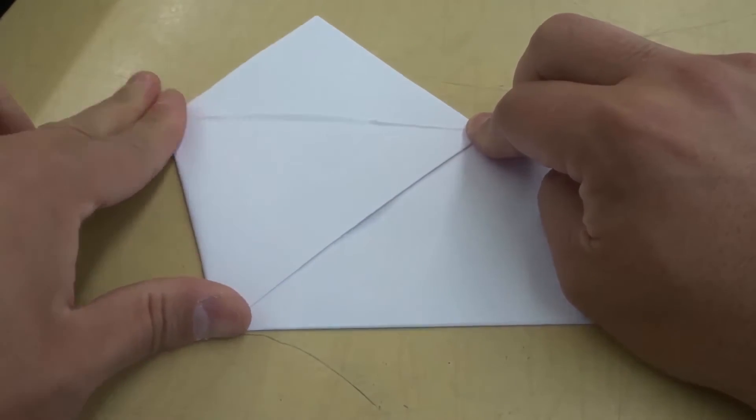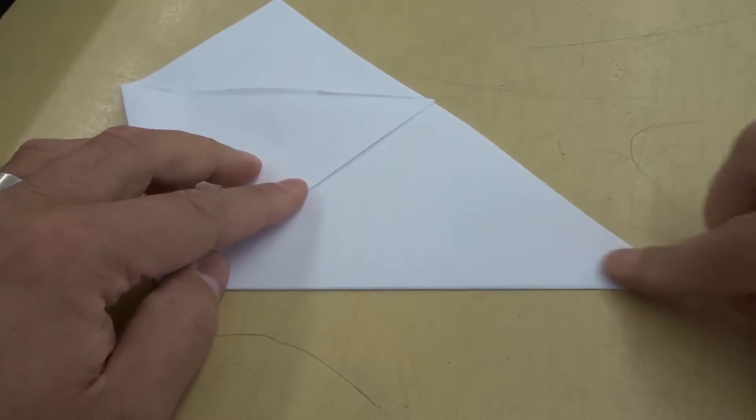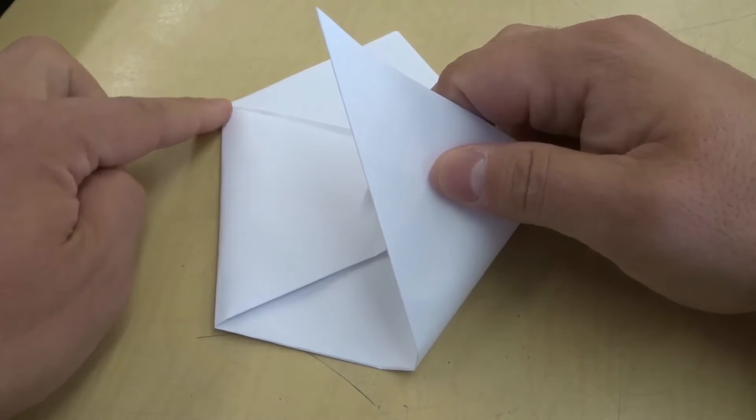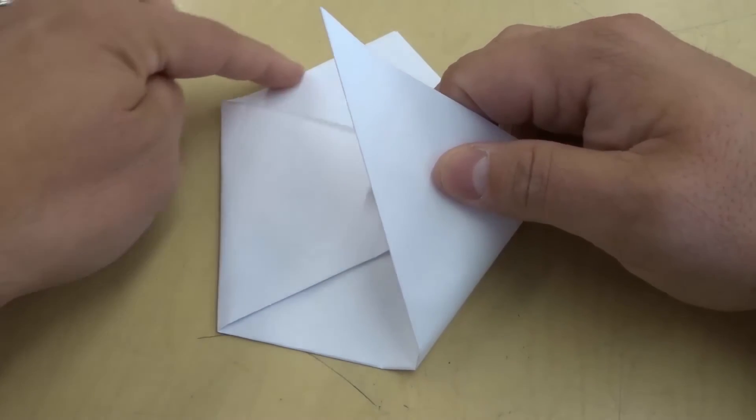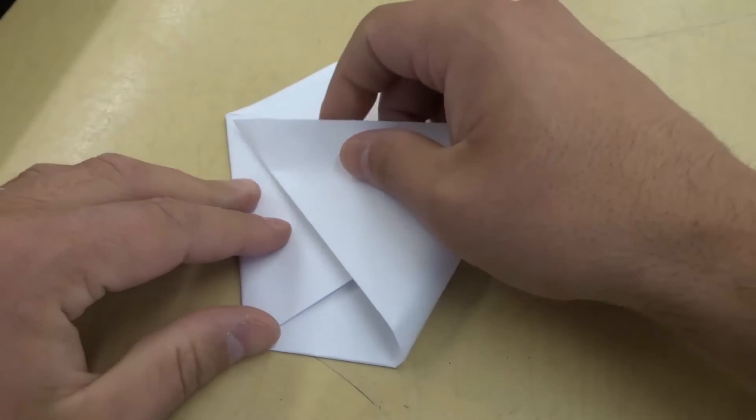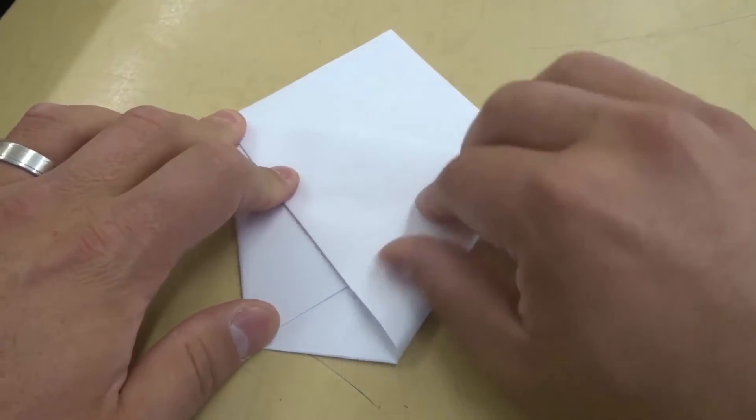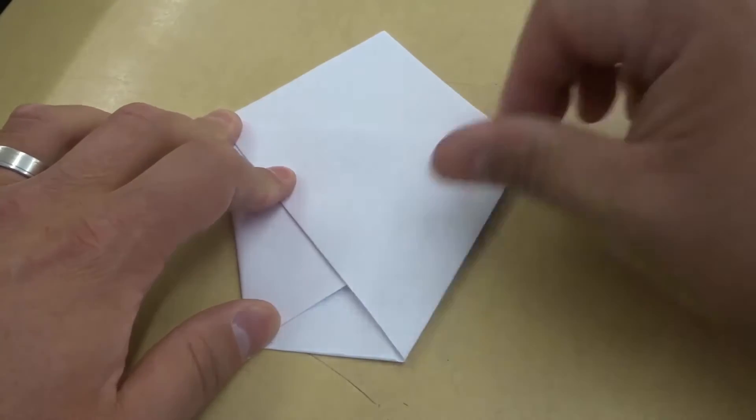Crease it nicely like that and then I'm gonna fold the lower right corner to meet this point right over here that we created. So the middle of this line that was over here before. I'm roughly gonna meet that point right there. Once again crease it nicely.